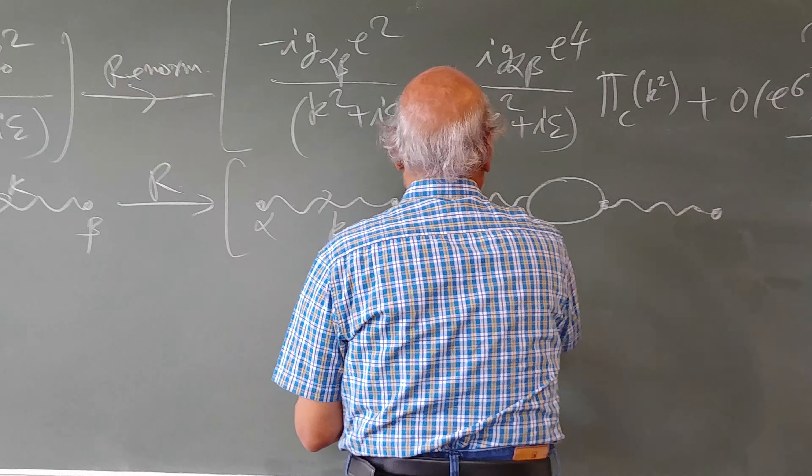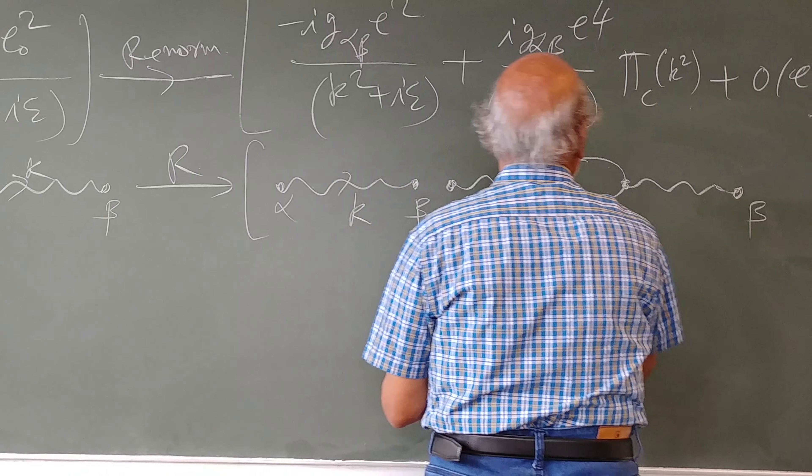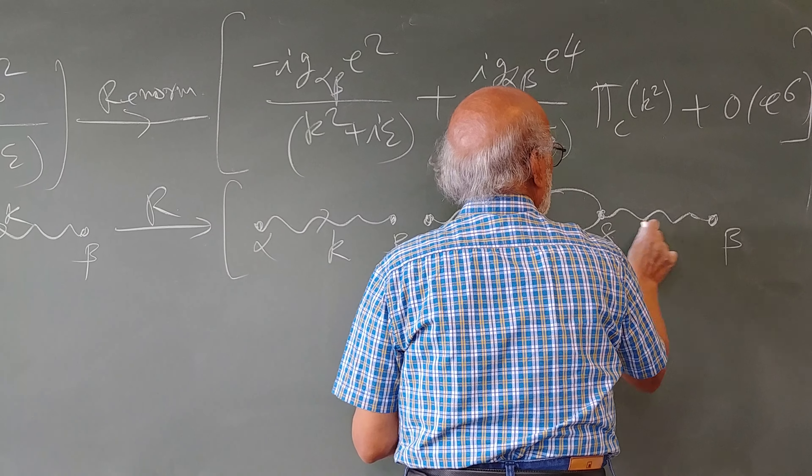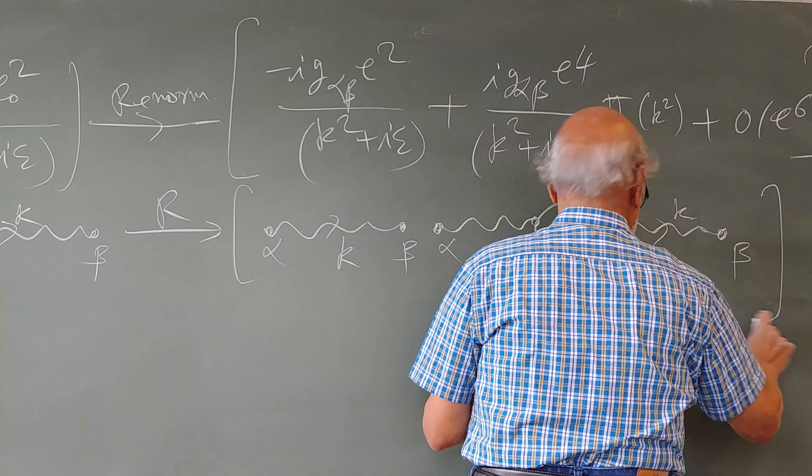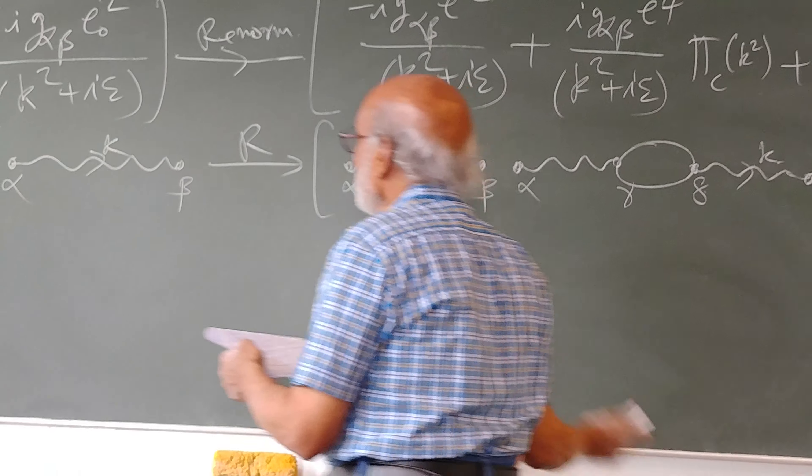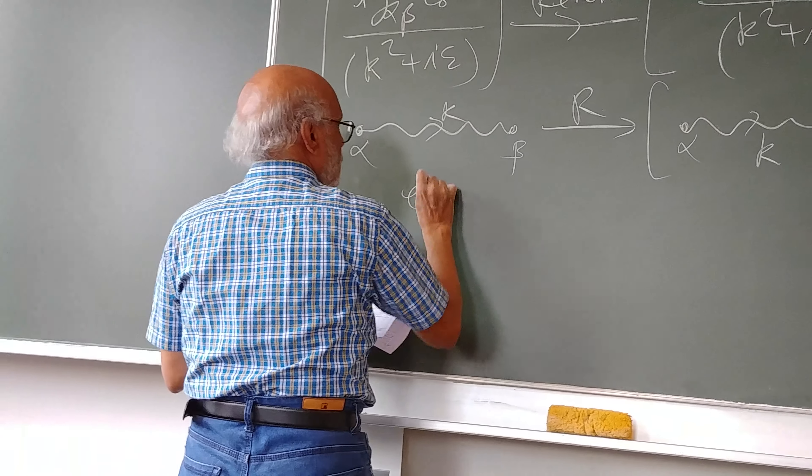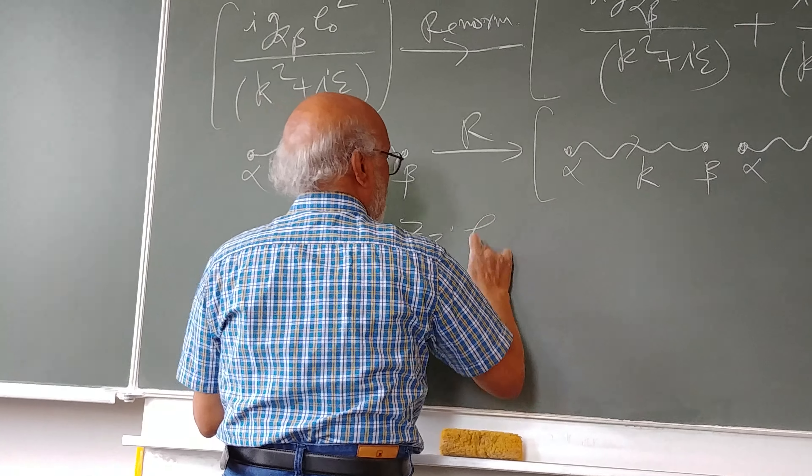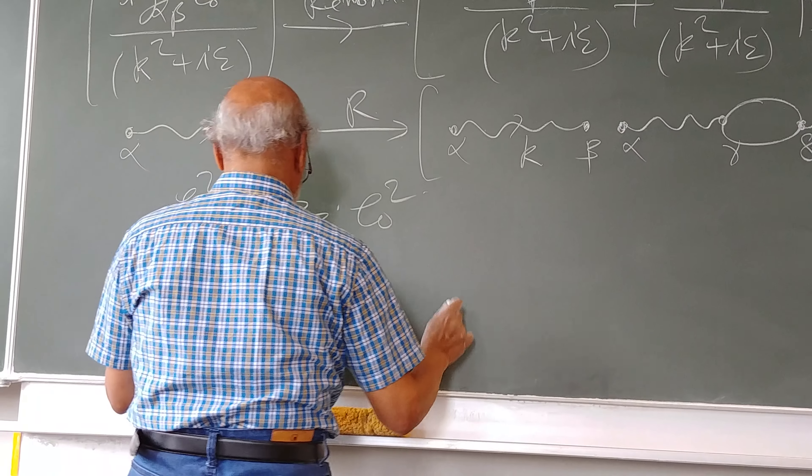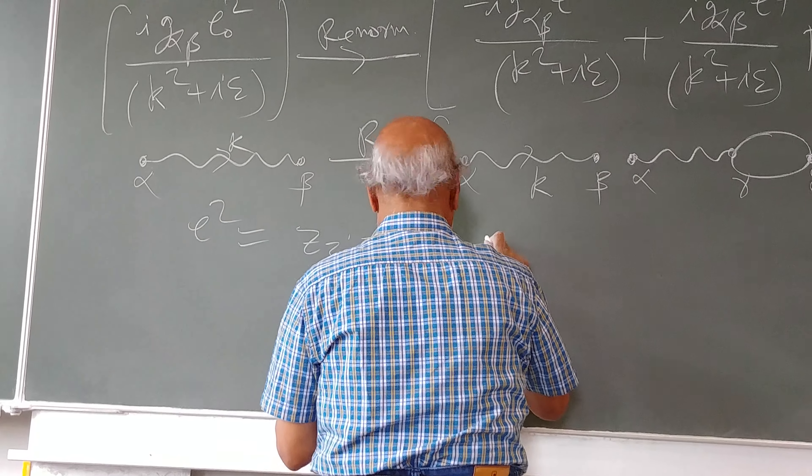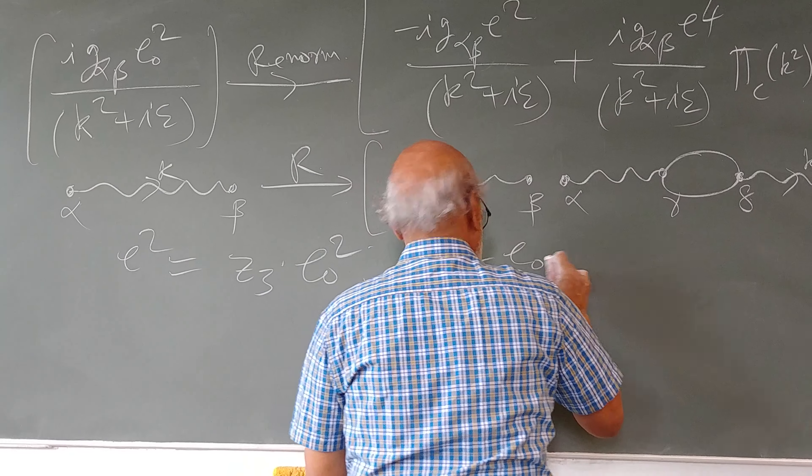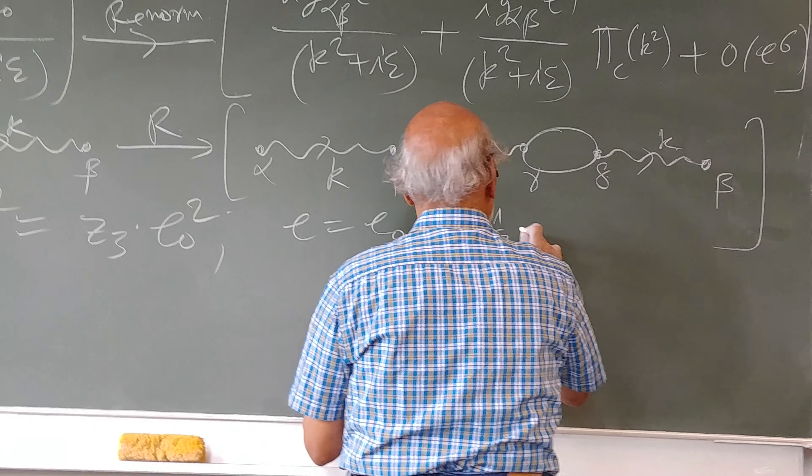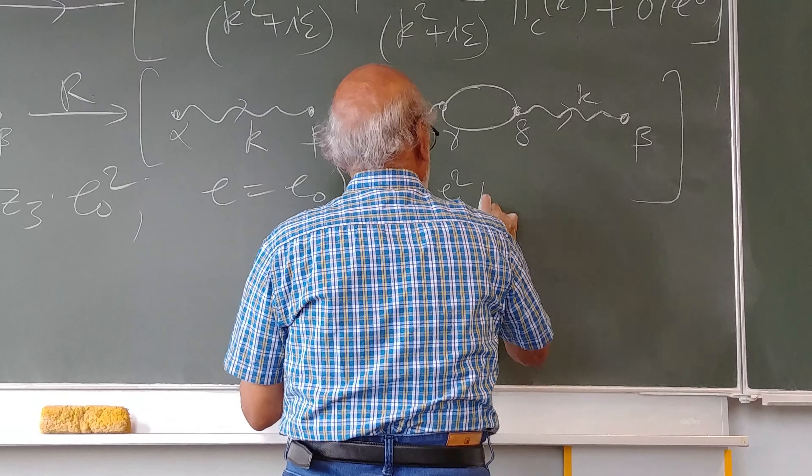So alpha beta gamma delta. And here e square with z3 times e0 square where e equals to e0 into 1 minus 1 half e0 square.